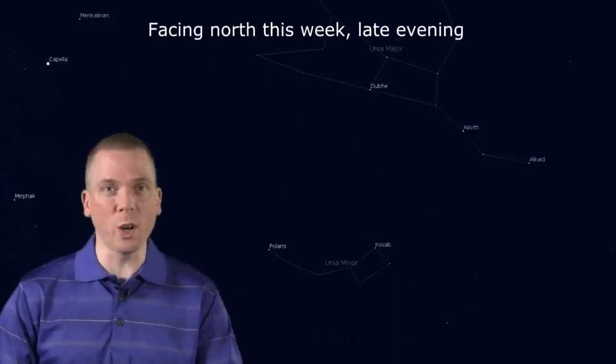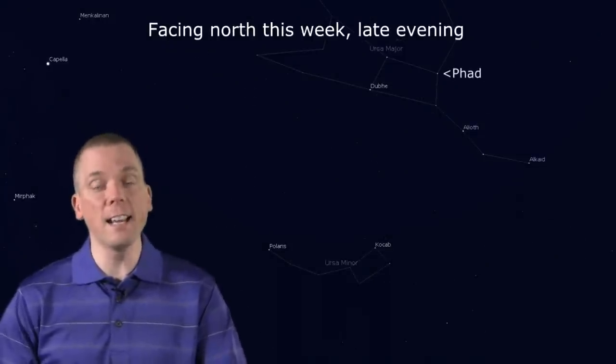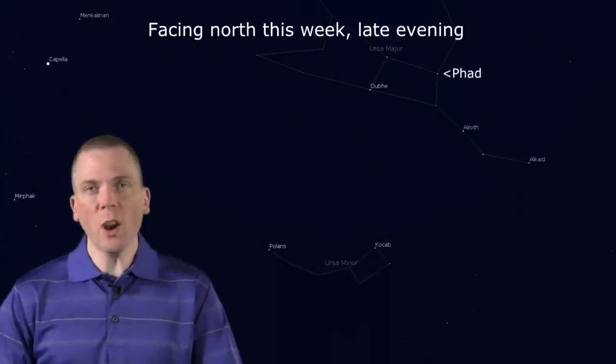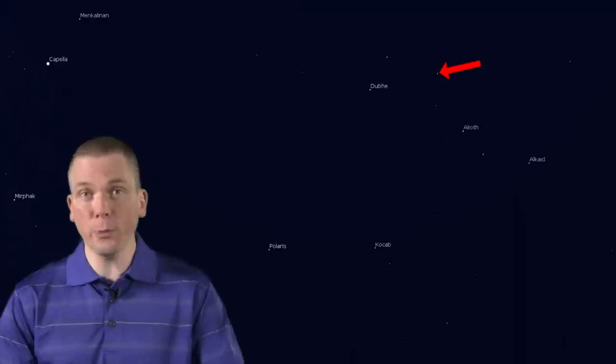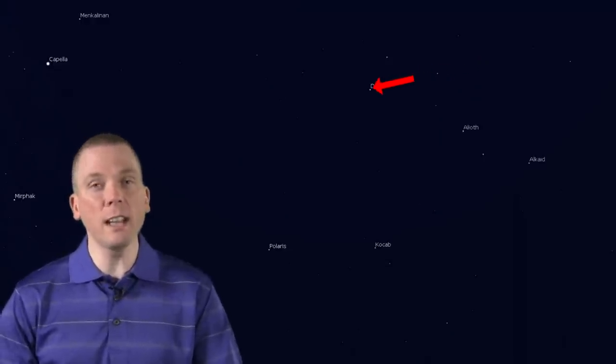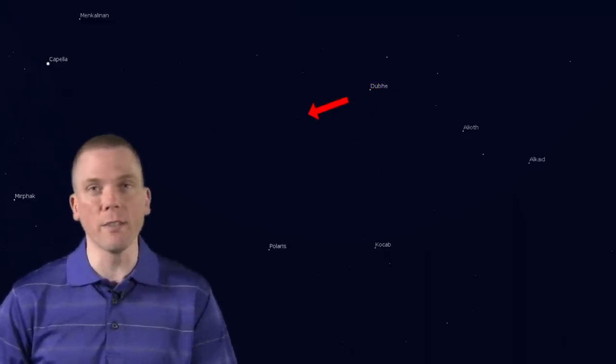Start at the two bowl stars of the Big Dipper, Phad and Dubhe. Draw an imaginary line from Phad through Dubhe, that's about 10 degrees of sky. The two galaxies are nearly on that same line, another 10 degrees, so this will help you estimate the approximate location of them in the sky.